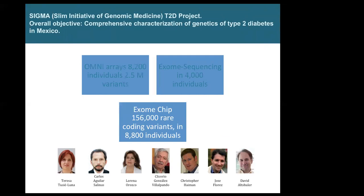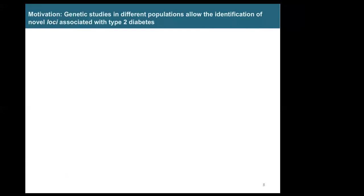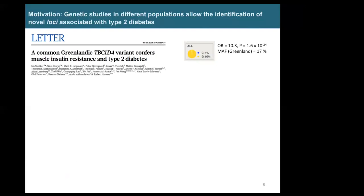I will focus this talk on the exome chip study. This is a huge collaborative effort with principal investigators from Mexico and the US, including Jose Flores and David Altshuler from the Broad. The main objective was to identify coding genetic variants with potential therapeutic implications for Type 2 Diabetes. The motivation is that genetic studies in non-European populations can allow identification of novel loci associated with Type 2 Diabetes.